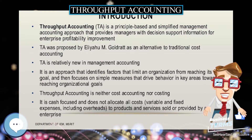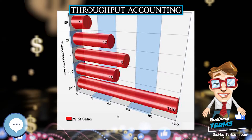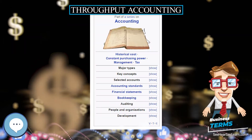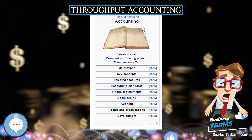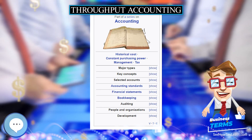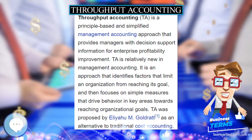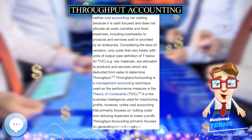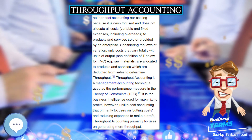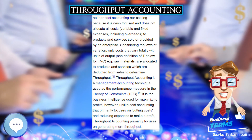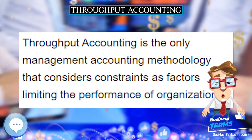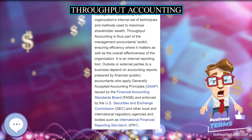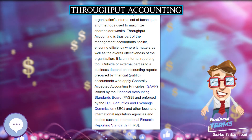Goldratt argues that, under current conditions, labor efficiencies lead to decisions that harm rather than help organizations. Throughput accounting therefore removes standard cost accounting's reliance on efficiencies in general, and labor efficiency in particular, from management practice. Many cost and financial accountants agree with Goldratt's critique, but they have not agreed on a replacement of their own, and there is enormous inertia in the installed base of people trained to work with existing practices.